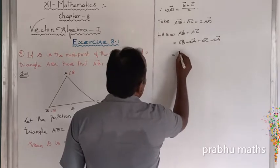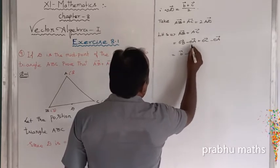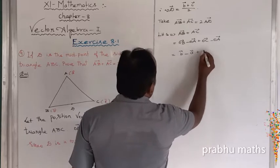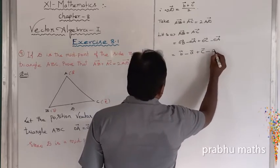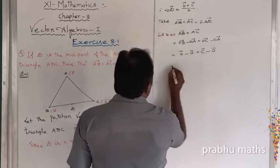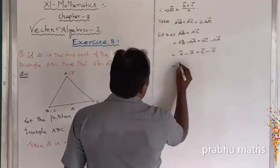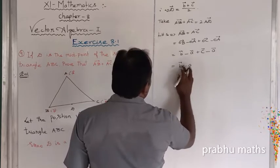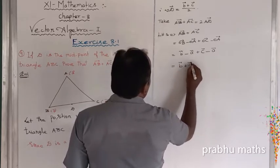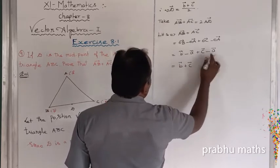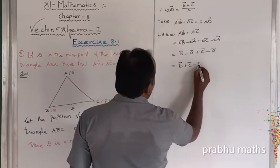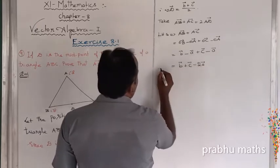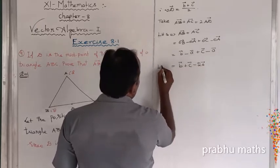Since OB equals B vector, OA equals A vector, and OC equals C vector, LHS becomes: B vector minus A vector plus C vector minus A vector, which equals B vector plus C vector minus 2A vector. This is LHS — equation 1.